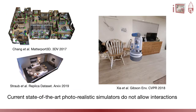But why do we need a new simulation environment to study interactive navigation? Current photorealistic simulators are based on 3D reconstructions of real-world spaces. These models resemble the real-world distribution of objects and rooms and have the potential of simplifying sim-to-real transfer. The drawback is that these 3D reconstructions are one single interconnected mesh for the entire scene, making it impossible to change the configuration of objects by interacting. Therefore, these environments cannot be used to develop and evaluate interactive navigation solutions.